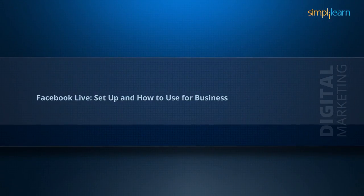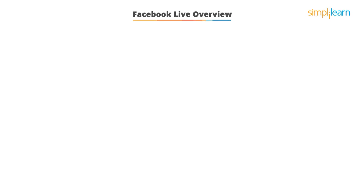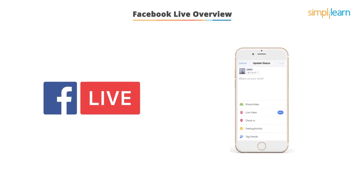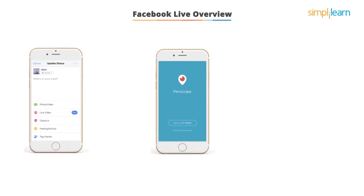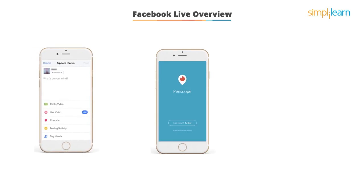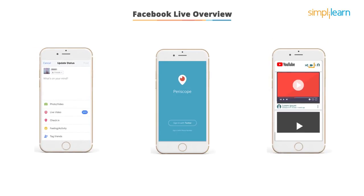Facebook Live setup and how to use for business. The final Facebook tool that businesses can use is Facebook Live, which basically allows you to live stream video to your Facebook audience. Live streaming started on Twitter a few years ago through Periscope. It soon moved to YouTube and Facebook and is now a really exciting communication tool to connect instantly with your audience.